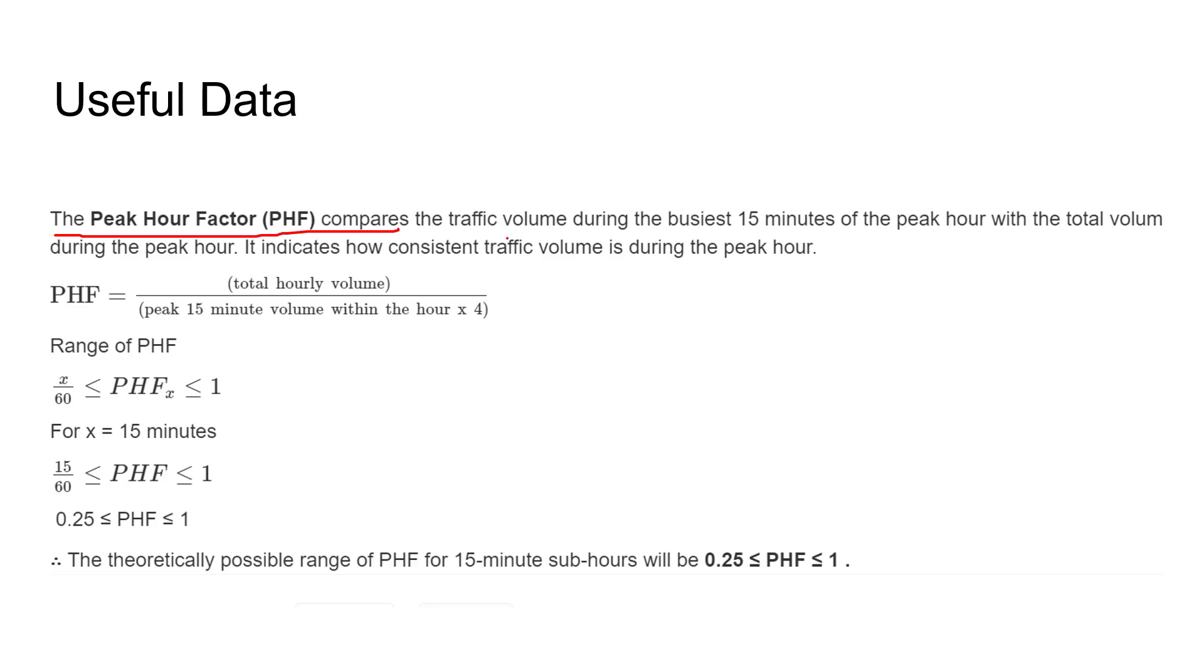Peak hour factor compares the traffic volume during the busiest 15 minutes of the peak hour with the total volume during the peak hour. It indicates how consistent the traffic volume is during the peak hour. In simple language, it will say the maximum density of the vehicles in that time slot.